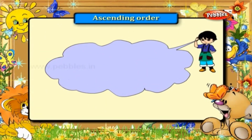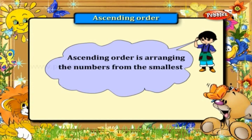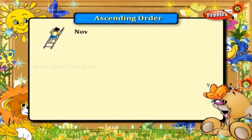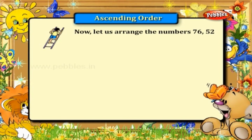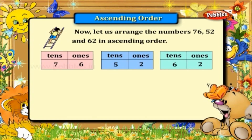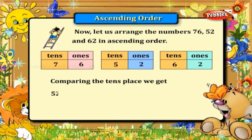So ascending order is arranging the numbers from the smallest to the greatest. Now let us arrange the numbers 76, 52, and 62 in ascending order. When you compare the numbers in the tens place, we get 52, 62, and 76.